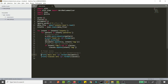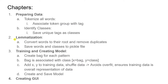Now we will cover lemmatization. Lemmatization is actually converting words to their root and removing duplicates. For example, if you have sentences like 'I started liking apples', 'I like apples', or 'he likes apples', there are different forms: like, likes, liking, liked. All those words can be grouped into one root word — 'like'. That is what lemmatization is.